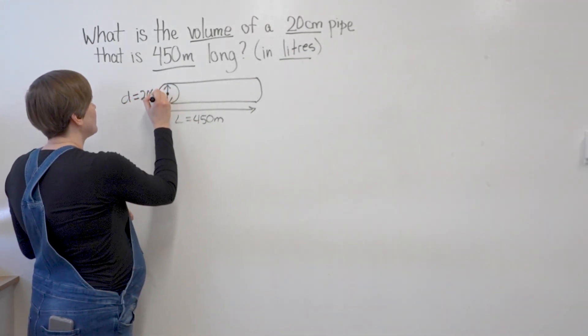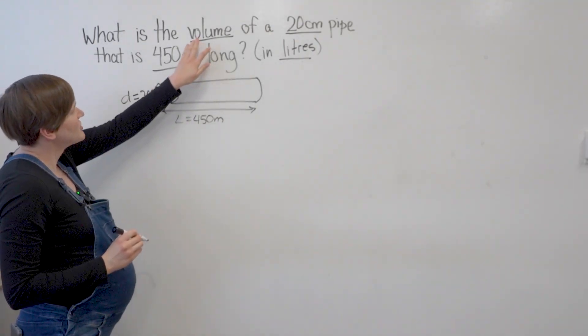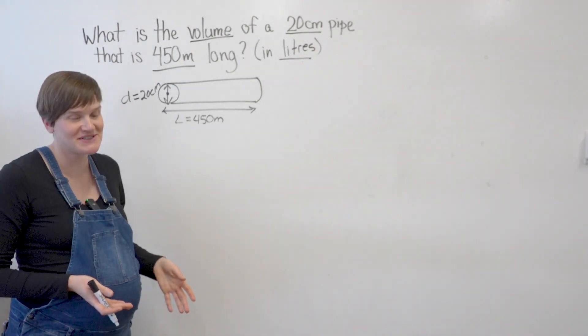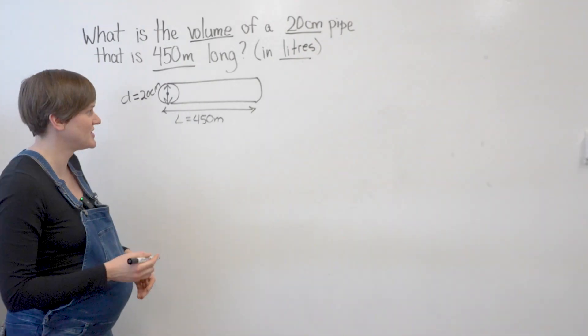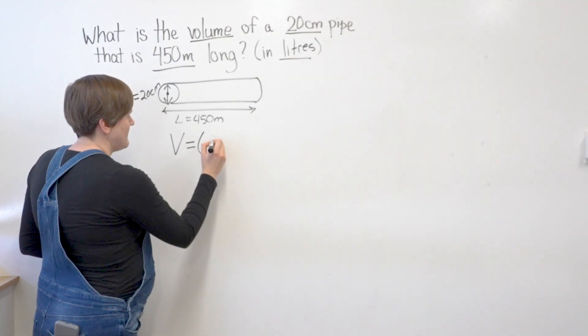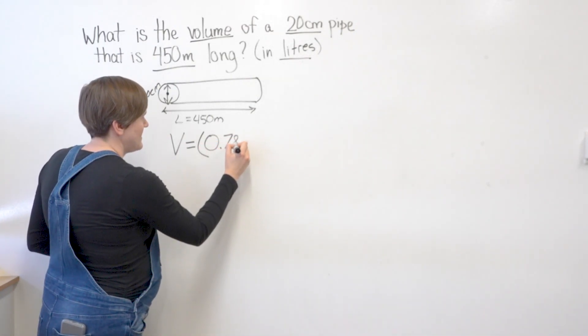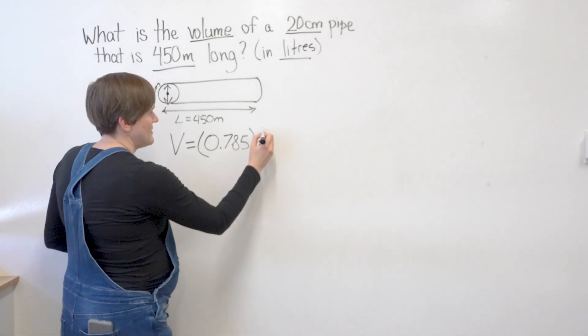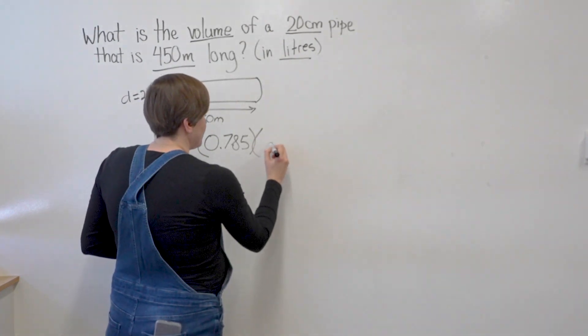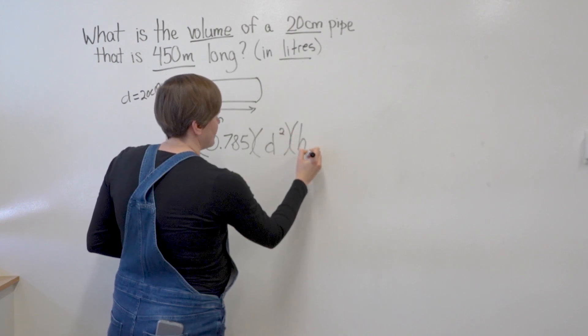So 20 centimeter pipe that's the diameter. Diameter equals 20 centimeters. Great. Now I'm trying to calculate volume. So I'm going to use the formula for volume of a cylinder that you find on your formula sheet. And it is written like this. Volume equals 0.785 times diameter squared times height.